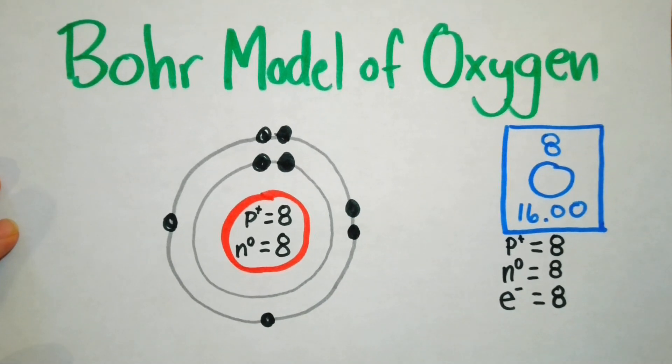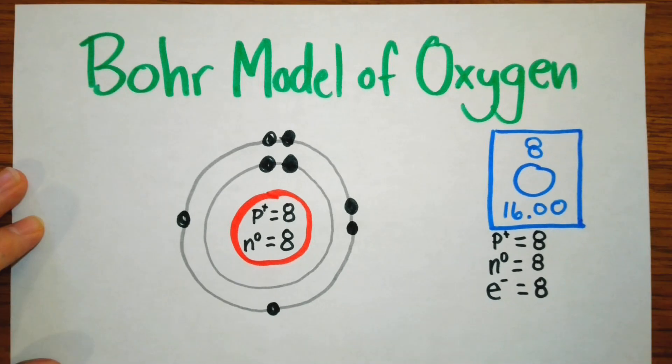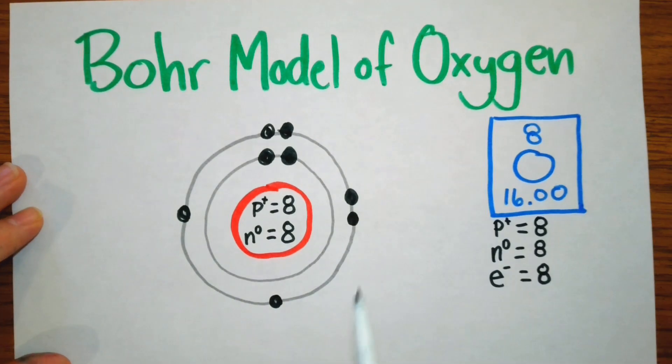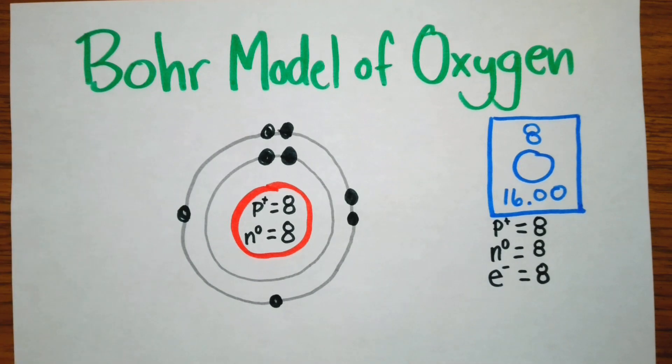And so now we have the Bohr model of oxygen. You see right here we have two electrons that are unpaired, and that is why oxygen likes to have two bonds.